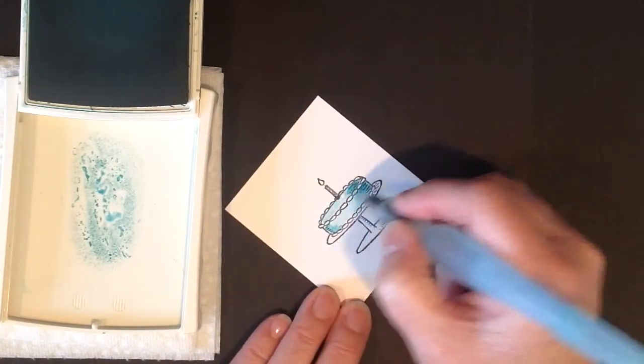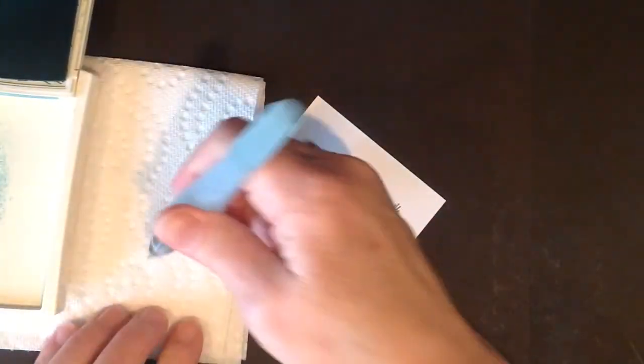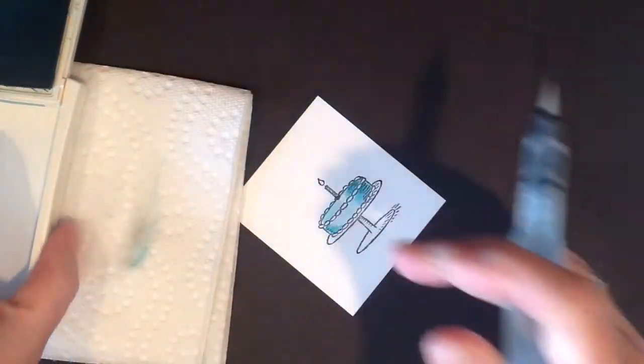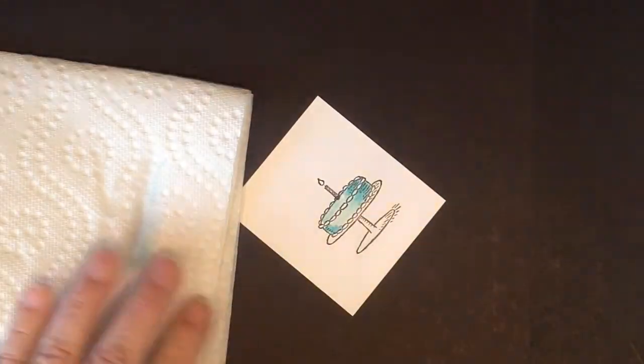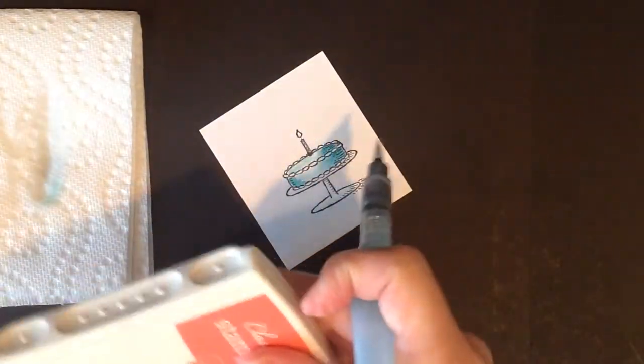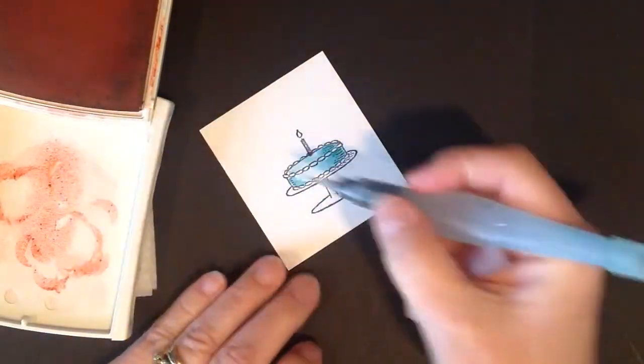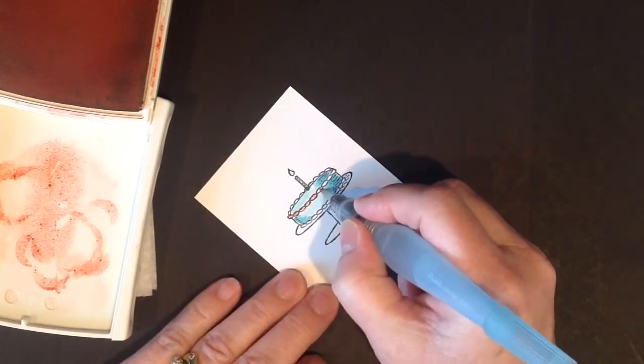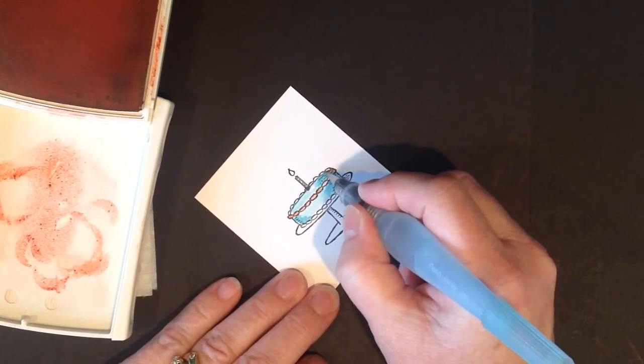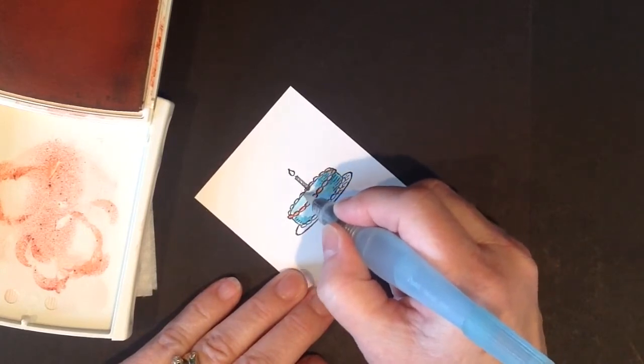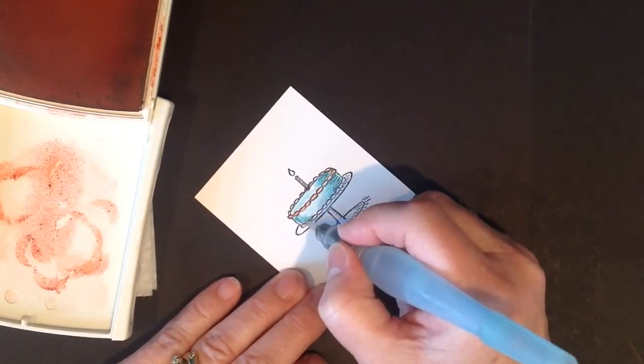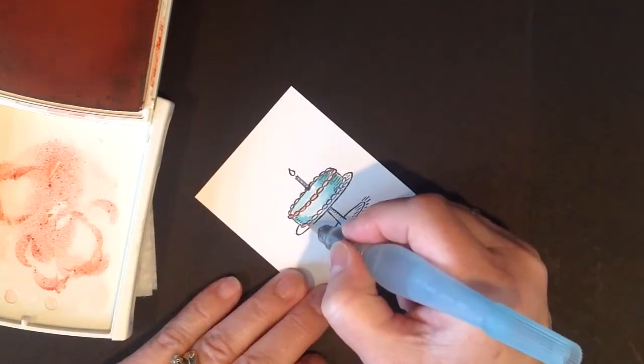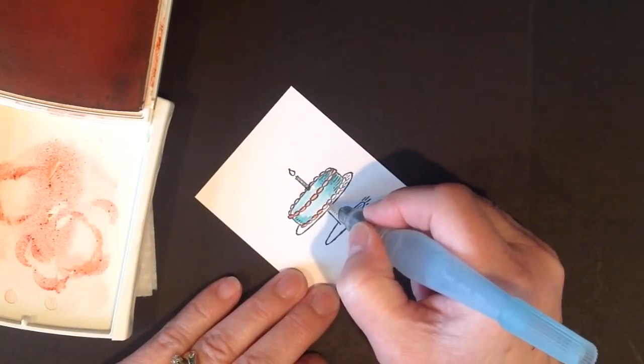To clean this out, you're just going to squeeze it a little bit and rub it. Now I'm going to take our Calypso Coral and decorate our frosting a little bit. So we're just going to go in here like this. This is a little darker. I'm not going to worry about omitting because they're so small. Grab a little more ink.